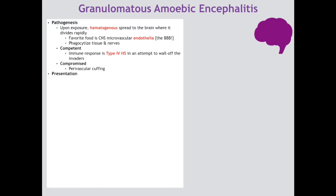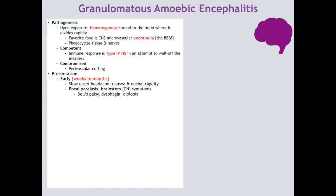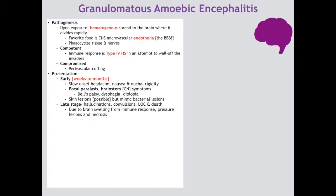In an immunocompromised patient, such as a transplant recipient on immunosuppression, you will see perivascular cuffing because it is feeding on the endothelia. Early clinical presentation can take weeks to months to appear, beginning with slow-onset headache, nausea, and nuchal rigidity — typical signs of meningitis or encephalitis. The patient may also present with focal paralysis or brainstem cranial nerve symptoms like Bell's palsy, dysphagia, or diplopia. Skin lesions are possible but will mimic bacterial lesions and, crucially, will not respond to antibiotics. Late stage leads to hallucinations, convulsions, loss of consciousness, and ultimately death from brain swelling or pressure necrosis.